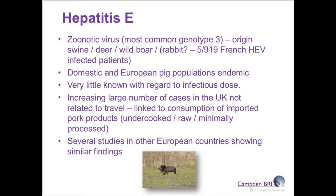Hepatitis E virus is the only one here with a different route of transmission — it's a zoonotic virus, which means it originates in an animal reservoir. In this case, the most common reservoir is pigs, but it has been implicated in outbreaks associated with deer, wild boar, and possibly rabbit meat. Although not confirmed, five out of 919 French hepatitis E cases were rabbit-associated. The pig population in the UK and other European countries is endemically infected with hepatitis E, though the pigs don't show any symptoms.